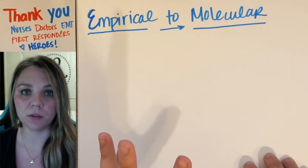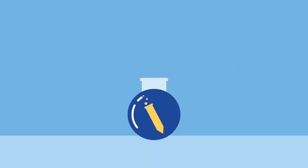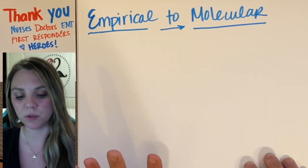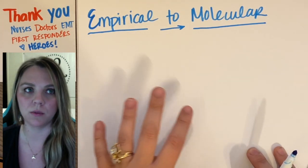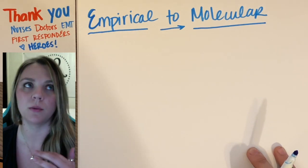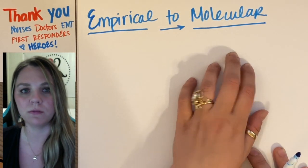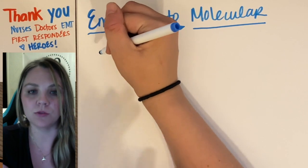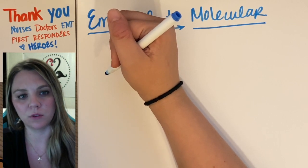We're going to look at how to take your empirical formula and figure out what the molecular formula is from that. Empirical to molecular is super easy. I'm assuming you've already found your empirical formula, so if there was a question to have you solve for the empirical, you've already done those steps. If you need help finding the empirical, go back and do that one. Now we just need to calculate what our molecular formula is going to be.